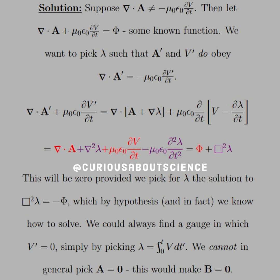Since they're not equal to one another, that has to equal something else. This is per se some known function, and we want to pick lambda such that A prime and V prime do obey the Lorenz condition.